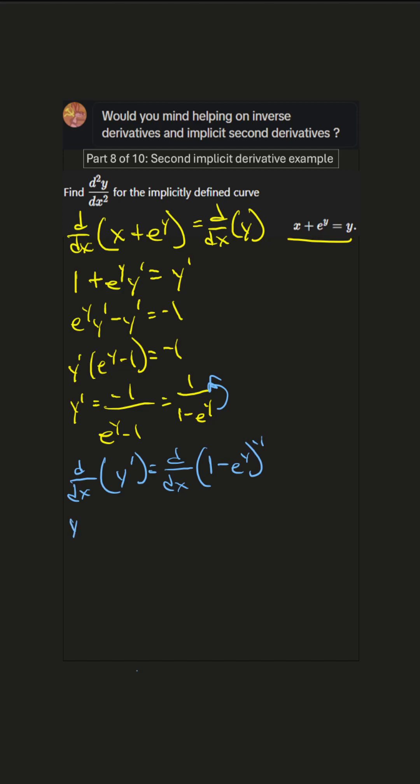We get y double prime equals, using the chain rule, bring down the negative 1, times 1 minus e to the y to the negative 2. That's just the power rule, times the derivative of the inside. Derivative of 1 is 0, derivative of negative e to the y is negative e to the y times y prime. We did that earlier, something very similar.